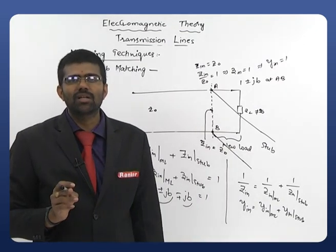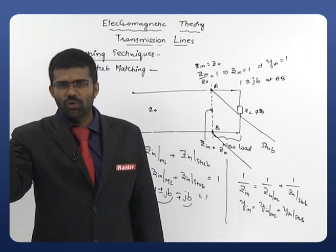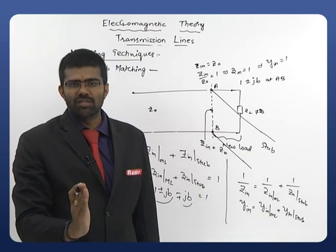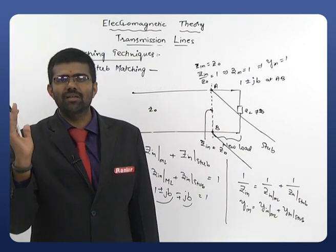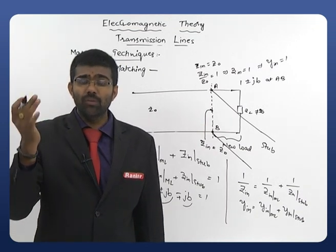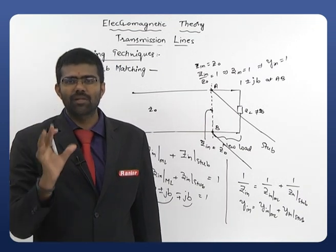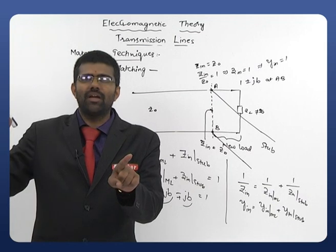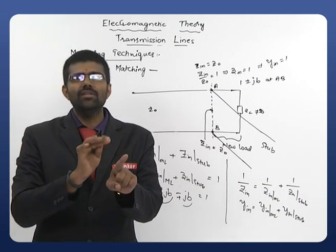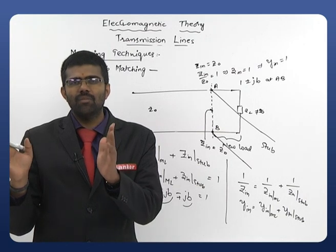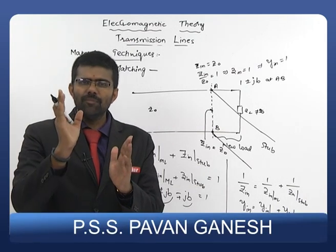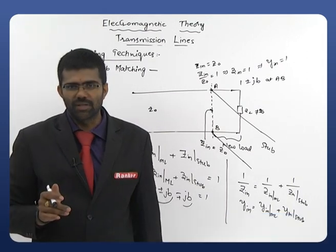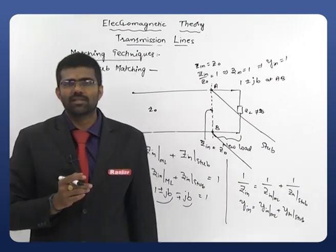You solve this problem using a Smith chart, which makes it very easy. Starting at the load, move towards the generator until you reach a location where the normalized admittance is 1 ± jB. Connect the stub there. The required input admittance of the stub is ∓ jB. Then, on the Smith chart, go from ∓ jB to the short-circuit point to calculate the required length of the stub.